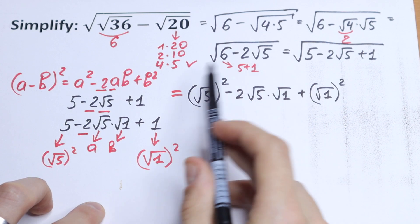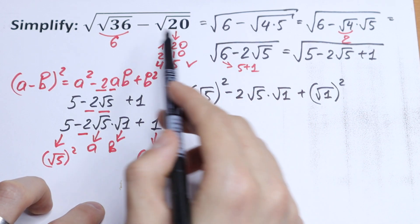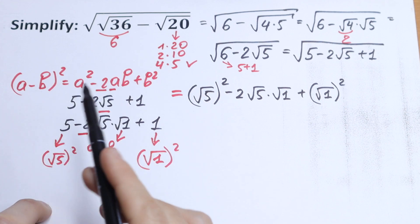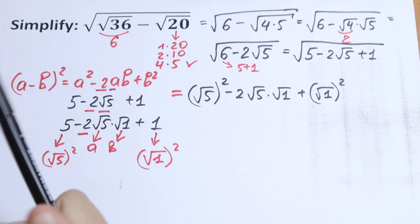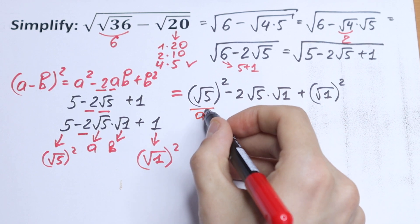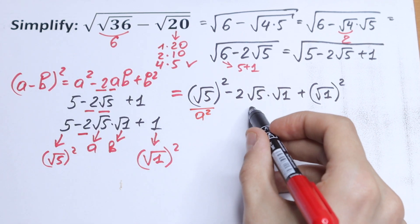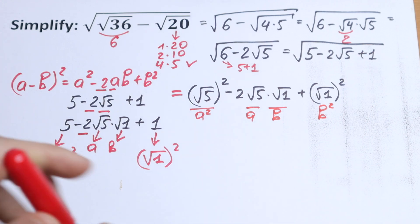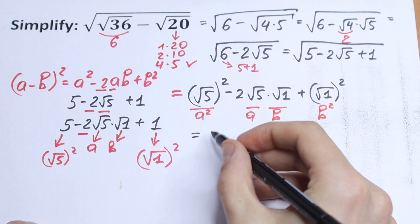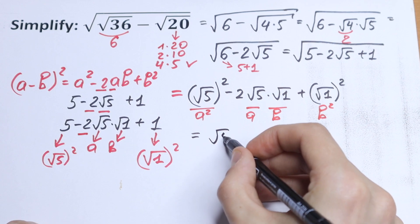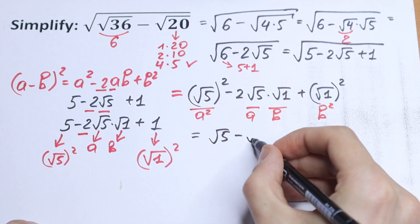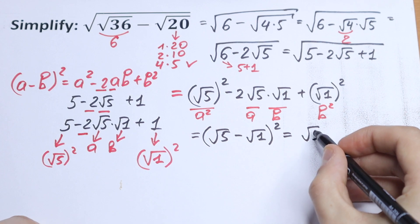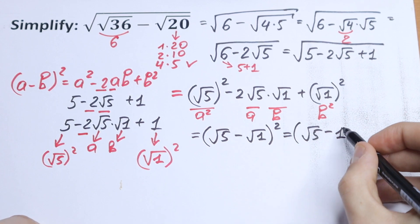If we simplify this in reverse, we have this expression — and moreover, this is our formula: (a − b)² right here. This is our a² (that's √5 squared), this is 2 (we need it), this is our a (which is √5), this is our b (which is √1), and this is our b². So this will be equal to (a − b)², meaning (√5 − √1)², which simplifies to (√5 − 1)².